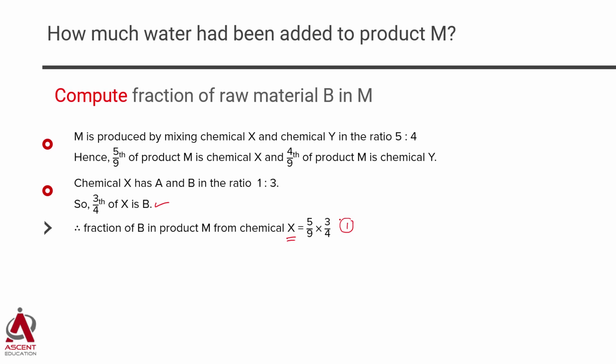Now, let's repeat the same thing for chemical Y. In chemical Y, the ratio of B to C is 2 is to 1. Our interest is only about B. So, 2 thirds of Y is B. Repeat the same thing. Fraction of B in product M coming from chemical Y is actually 4 ninths of M is Y. So, 4 by 9 into this value 2 by 3.